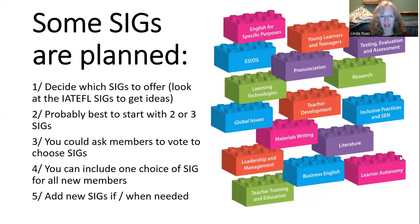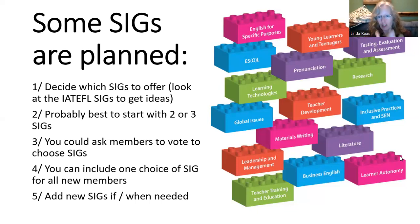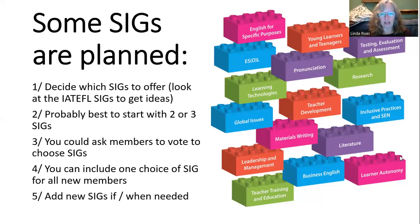I think it's probably best as a teaching association to start with two or three special interest groups — don't start with all of these at the same time. You could ask the members to vote to choose maybe three possible SIGs out of a total of five suggestions, or all choose one out of five and see which ones are the most popular. You can include one choice of SIG for all new members, and all the original members can choose one SIG. You can add new SIGs when they're needed, when you find out there's a new group of teachers who are interested in something else.